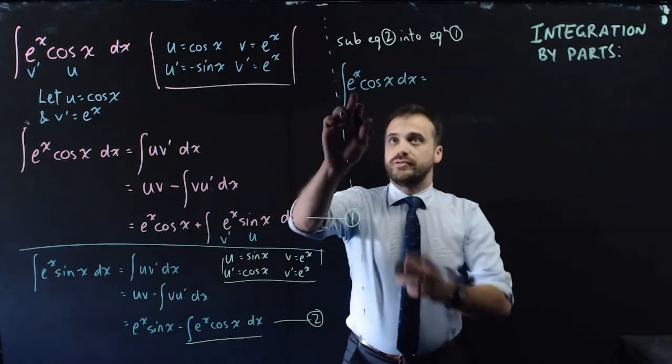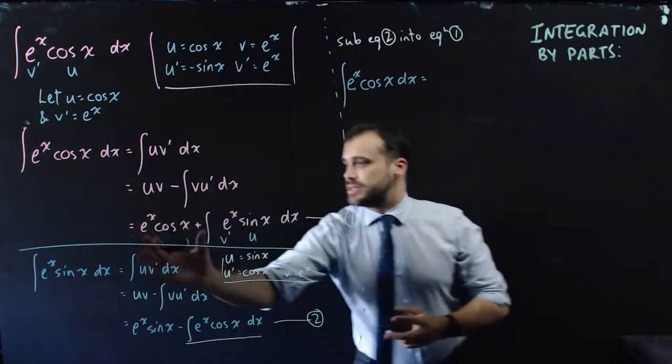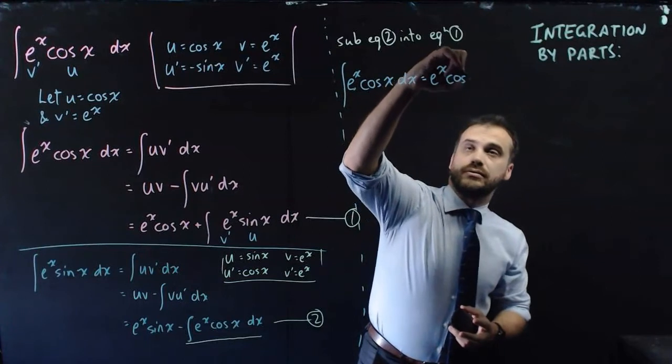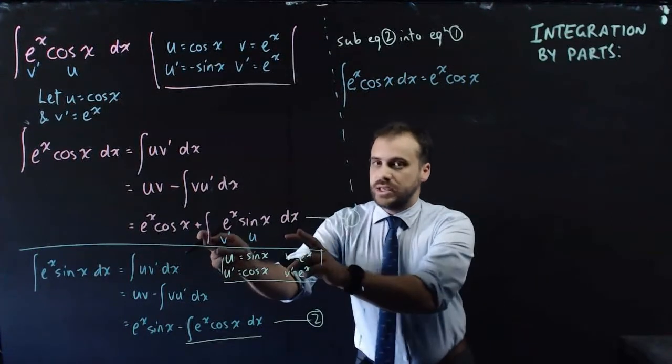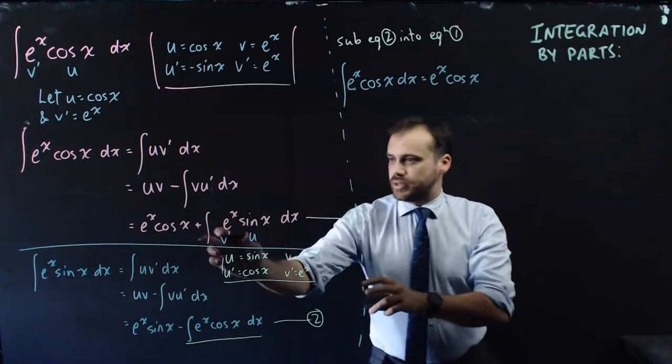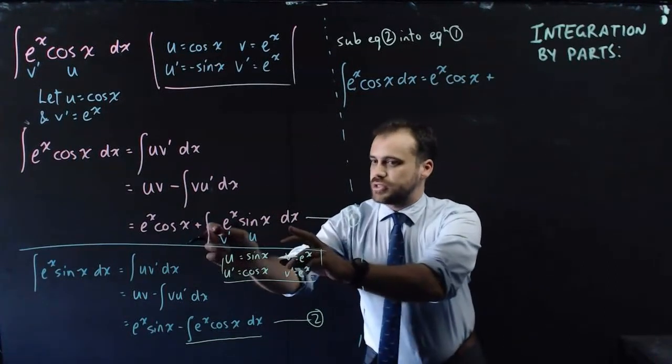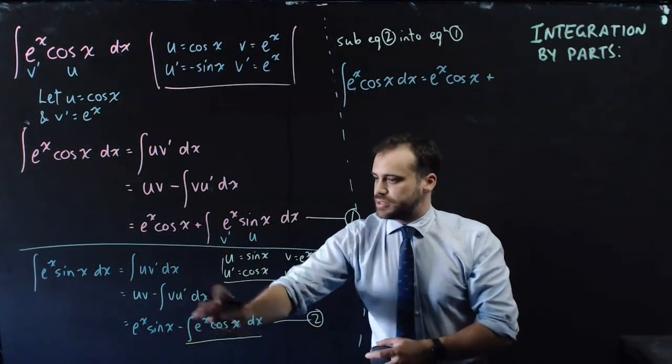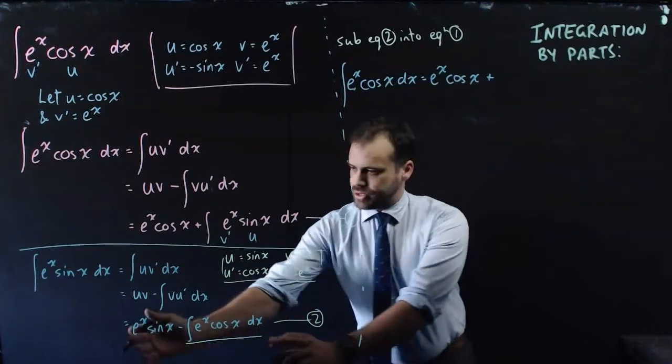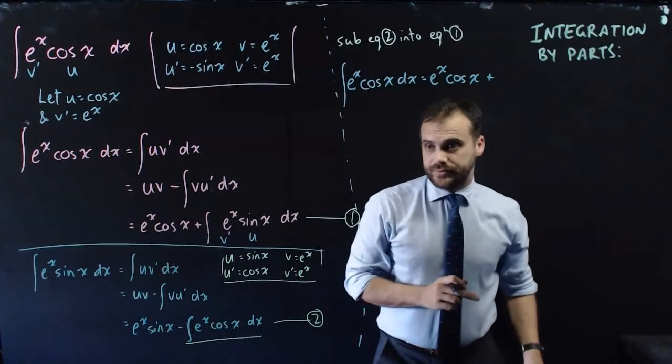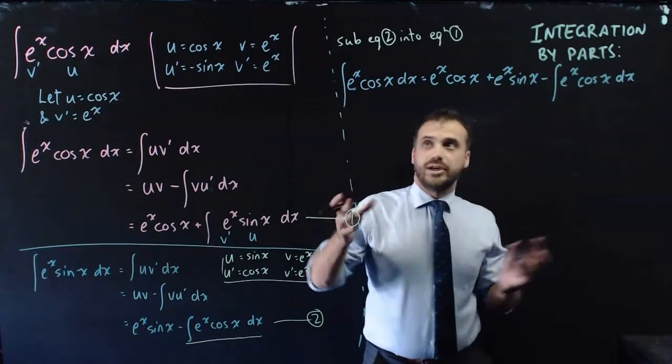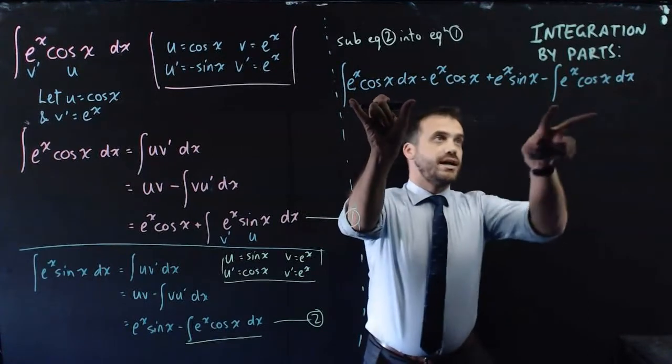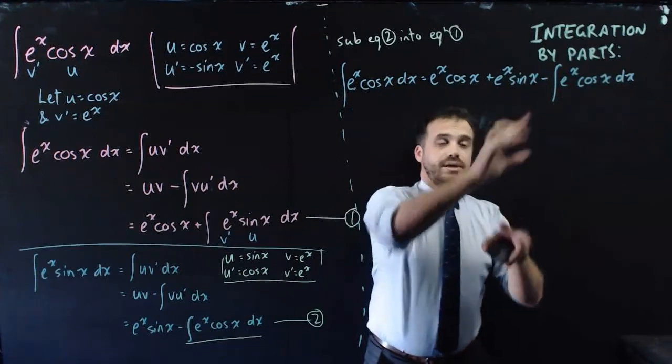We now know that the integral of e to the x cos x with respect to x is equal to e to the x cos x plus the integral of e to the x sine x. But we know that the integral of e to the x sine x from this equation is e to the x sine x minus the integral of e to the x cos x. So now we can just pick all of that up and put it right there. Now you might be looking at that going that still doesn't feel like it helps because I have an integral here and I have an integral here. But what you have is an integral here and the same integral here being subtracted.